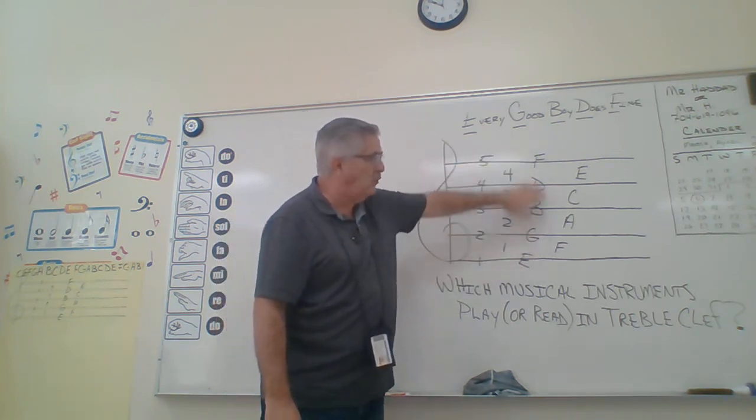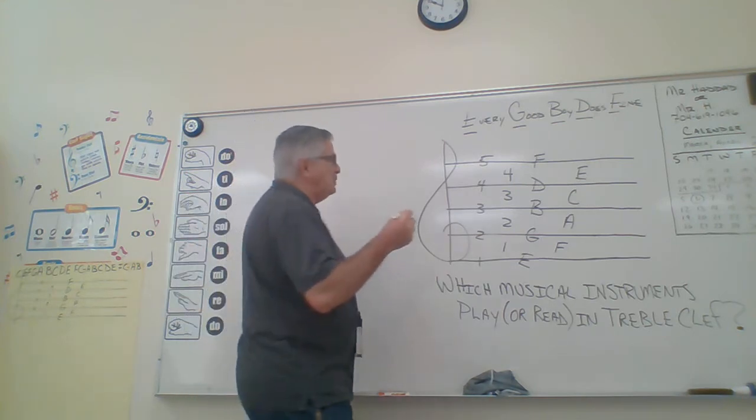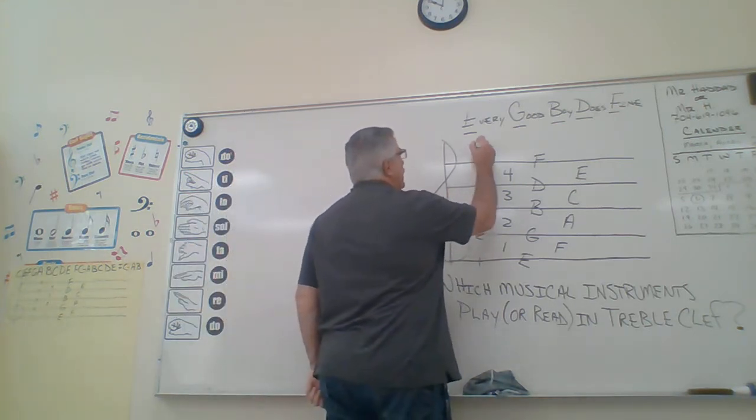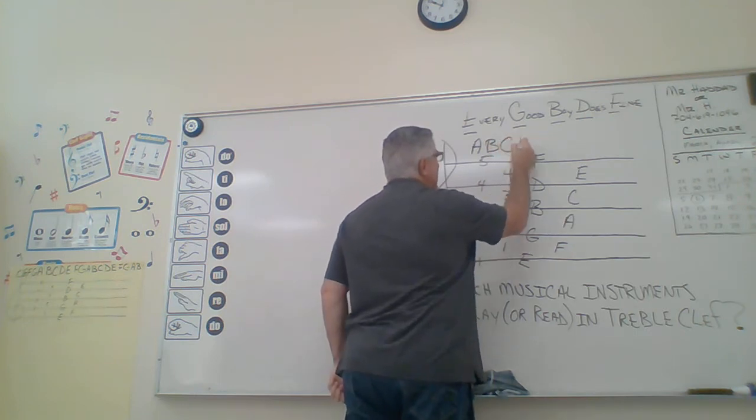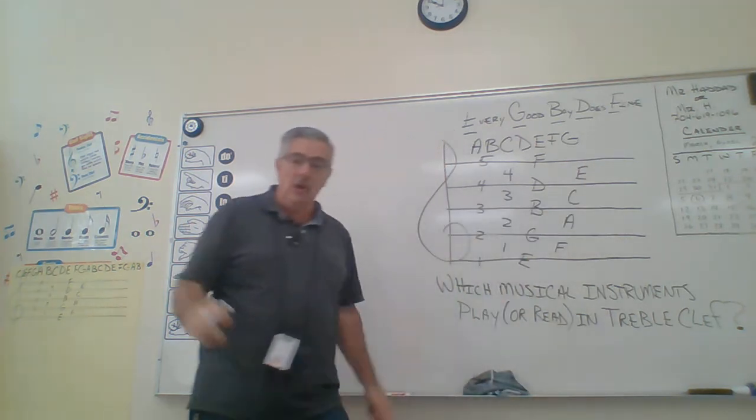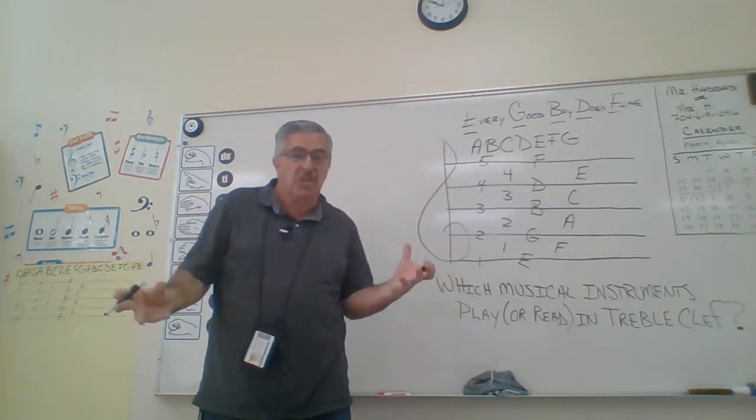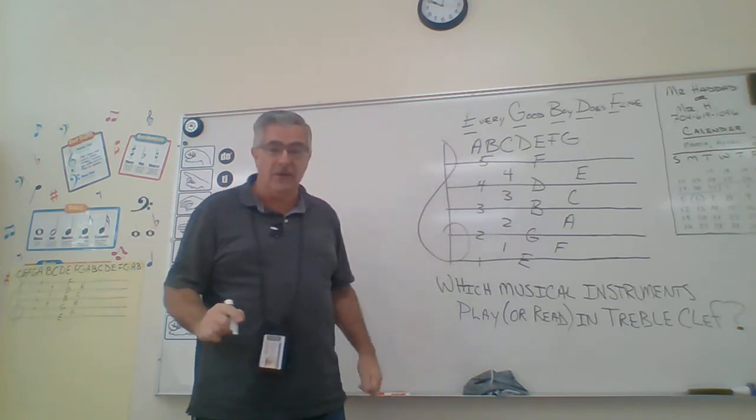we've talked about what letters go on what lines and spaces, and the reason why we do that is because in the musical alphabet we use these letters only: A, B, C, D, E, F, G. We don't use H or I or J or K or L or none of those other ones, we only use the first seven.